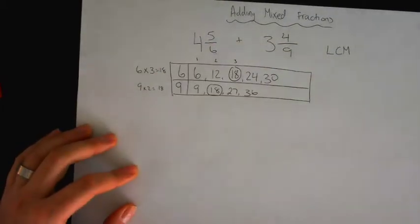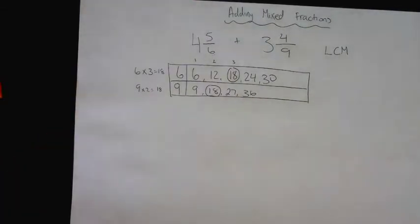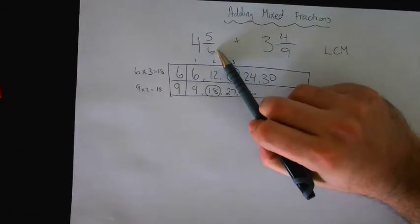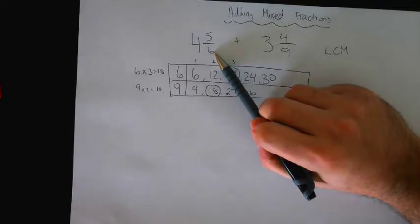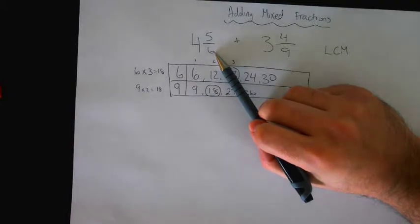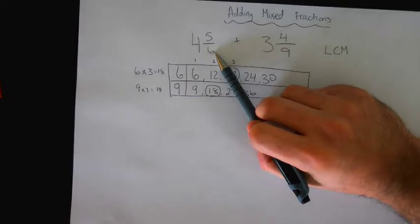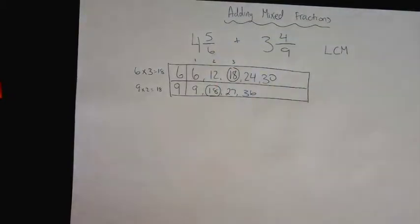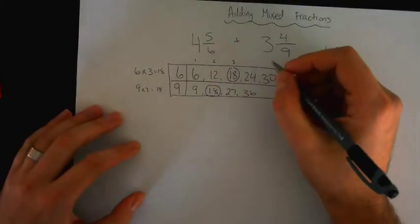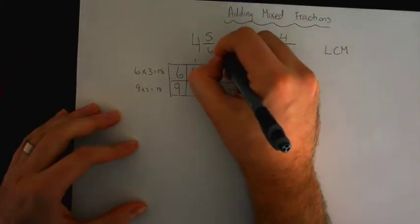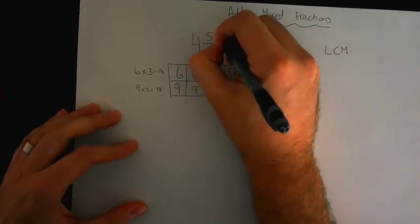So now comes the tricky part. How? We know we have to convert this to 18. So if we change this to 18, what can we not forget to do? We cannot forget to do this or else. Yeah? Right. What you do to the bottom, you have to do to the top. So multiply this by 3. Multiply this by 3.